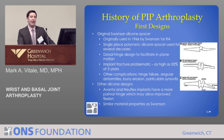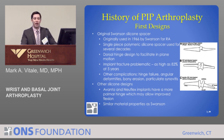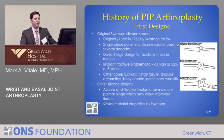The first designs of PIP joint arthroplasty were the early silicone arthroplasties, again designed by Swanson. These implants had significant problems: implant fracture was as high as 82% at five years in an early series. Other complications included failure of the hinge, angular deformities, erosion of the bone, and synovitis around the joint.